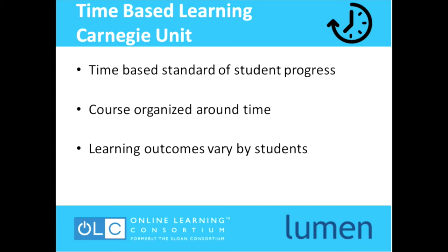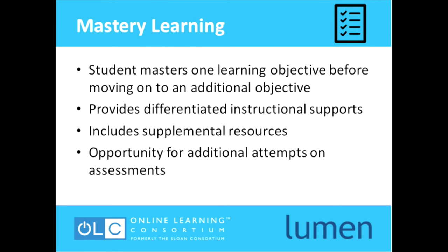The Carnegie unit is considered a time-based standard of student progress. A course is organized around a set time frame and the learning outcomes vary within each class. Mastery learning does not follow the same principles. In mastery learning, students master one learning objective before moving on to an additional objective, with the help of differentiated instructional supports and supplemental resources. Multiple attempts at formative assessments are often provided to help students show mastery before moving on. The learning tends to build upon one objective being mastered before moving to the next, making the process of learning smoother throughout class.